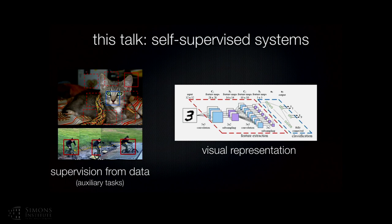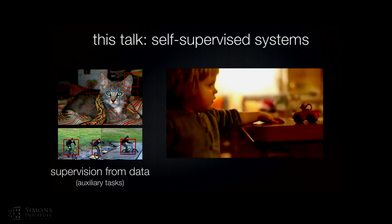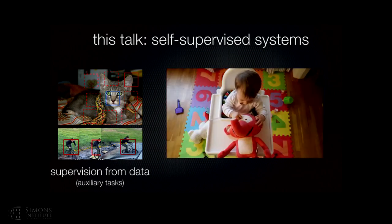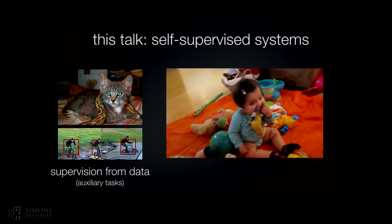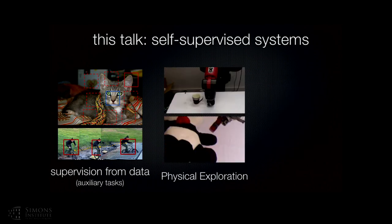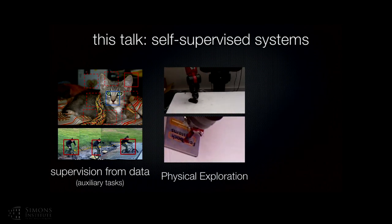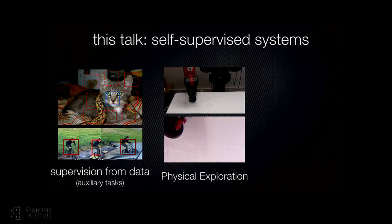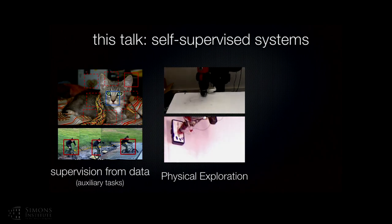However, all this learning still happens from passive images or videos. As Kristen talked about, most learning in humans is embodied in nature. As babies, we push objects, we poke objects, we put objects in our mouth, and this data helps us learn about our visual world. In the second part of the talk, I'm going to talk about a robot that physically tries to grasp objects, push objects, poke objects, and in the process learns visual representations good for detection or categorization.